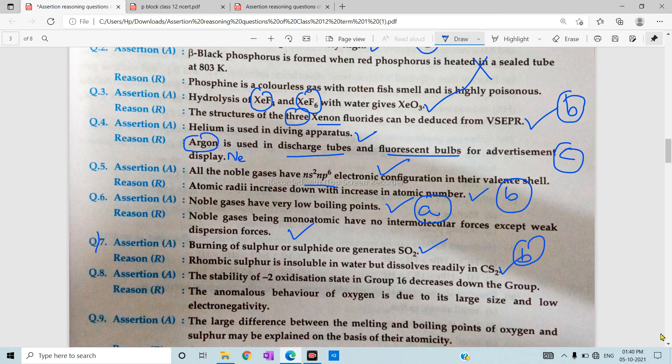Again B part, question number 8. Stability of minus 2 oxidation state in group 16 decreases down the group. This statement will be correct.